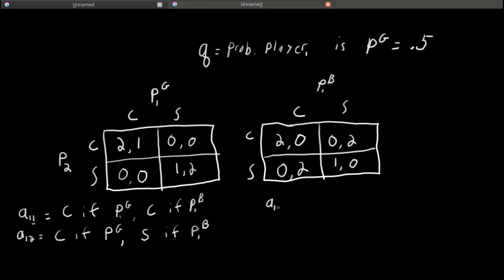This says player 1's third action is to go to the sporting event if he is the good type, or go to the concert if he is the bad type. And finally, player 1's last action, this says player 1's fourth action is to go to the sporting event if he is the good type, P1G, if he wants to meet up, and go to the sporting event if he is the bad type.